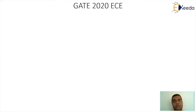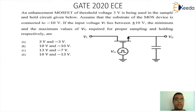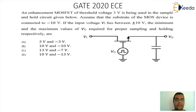We are having a question from the GATE 2020 EC paper. The question says: an enhancement MOSFET of threshold voltage 3V is being used in the sample and hold circuitry given below. Assume that the substrate of the MOSFET device is connected to minus 10V. If the input voltage VI lies between plus and minus 10V, the minimum and maximum value of VG required for proper sampling and holding respectively are?